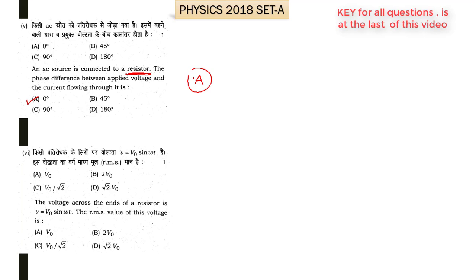The sixth part says: the voltage across a resistor is V = V₀ sin(ωt). What is the RMS value of this voltage? The RMS value of voltage or current is simply the peak voltage V₀ divided by √2. So C is the right option for the sixth part of question number 1.